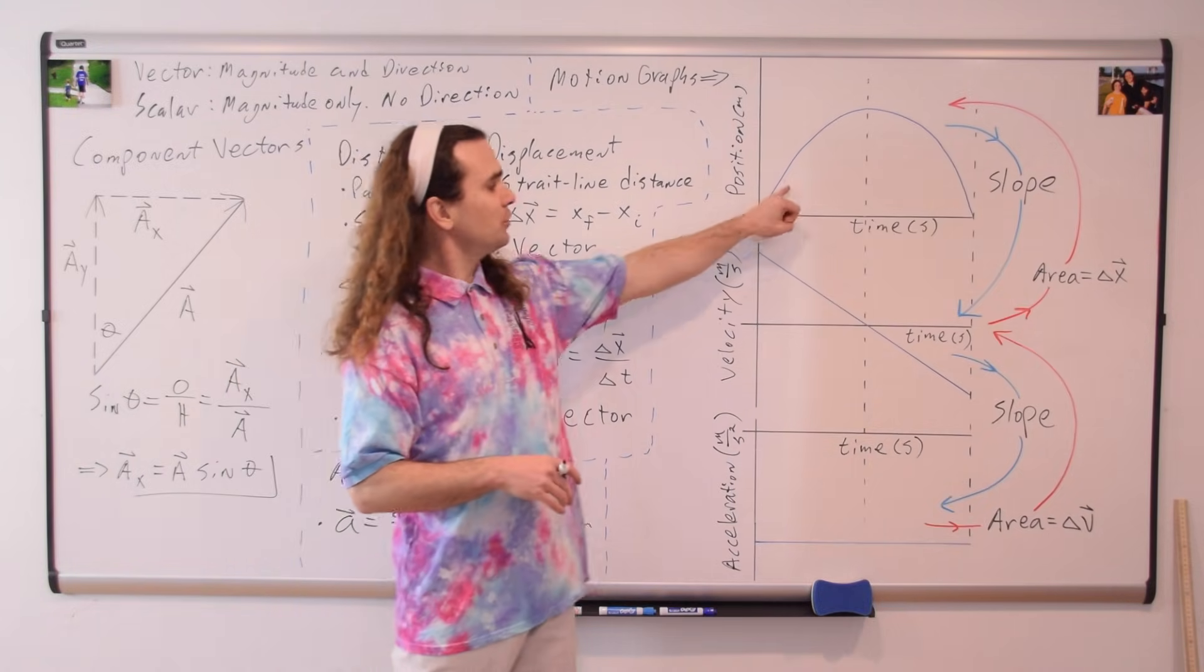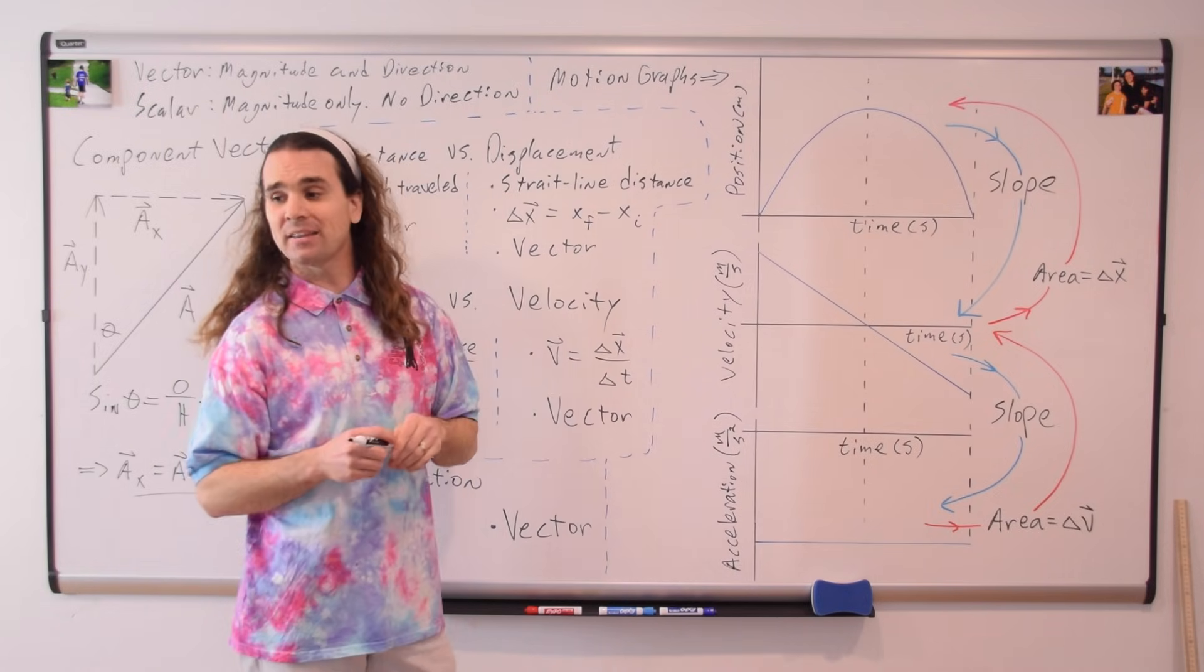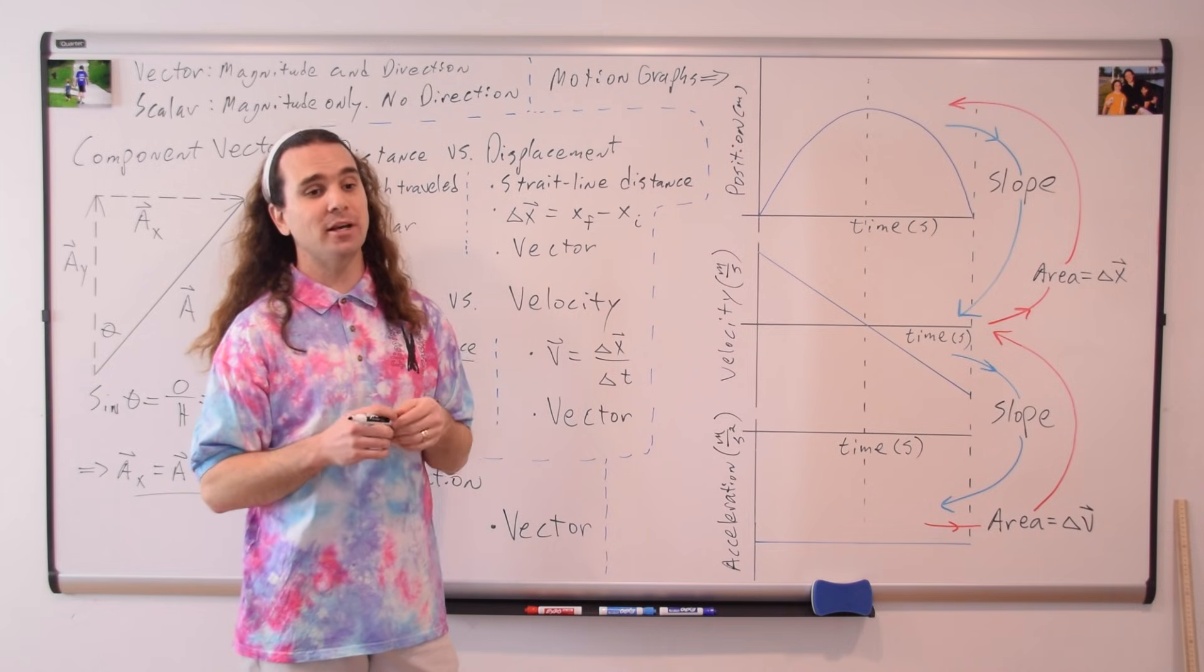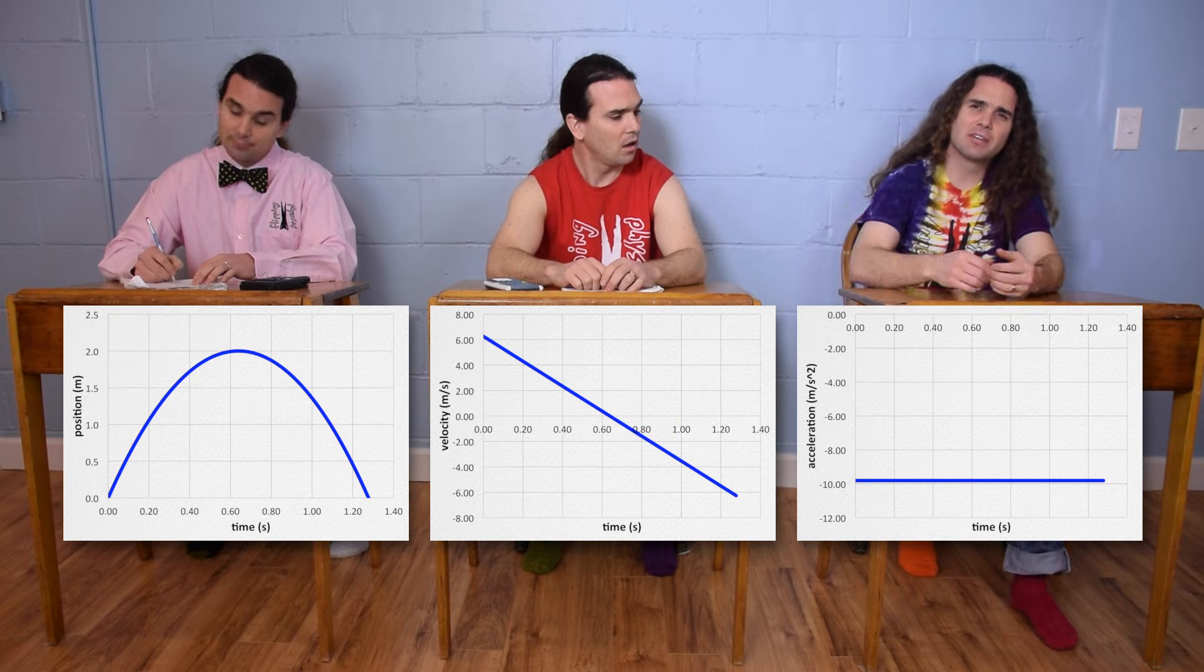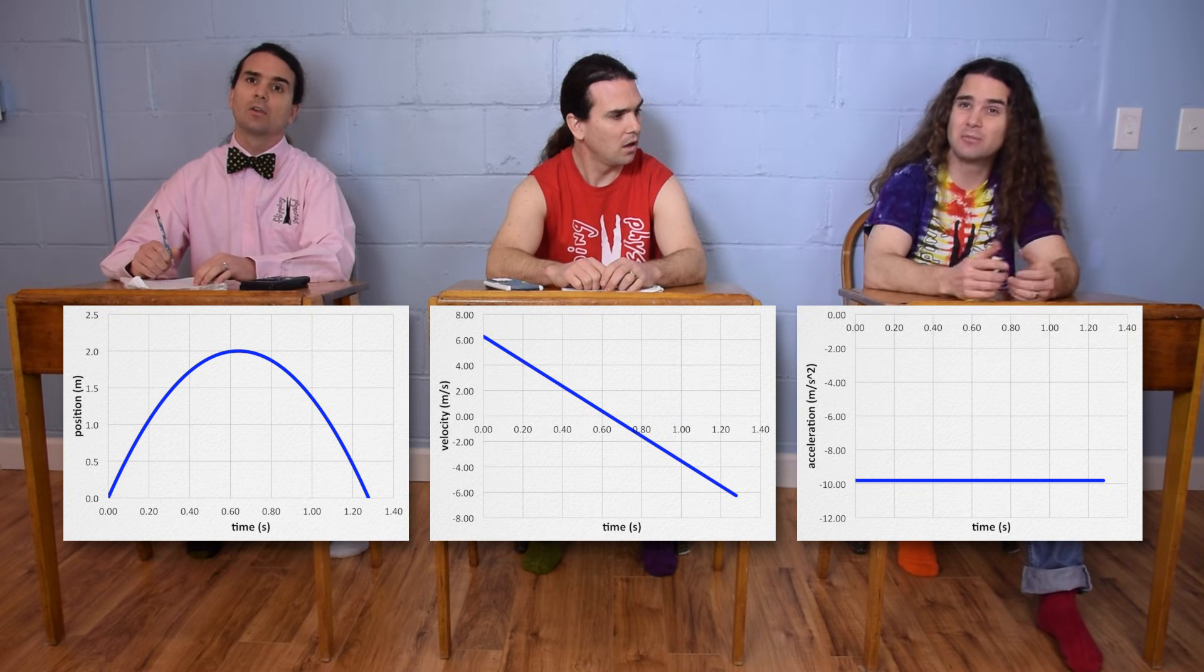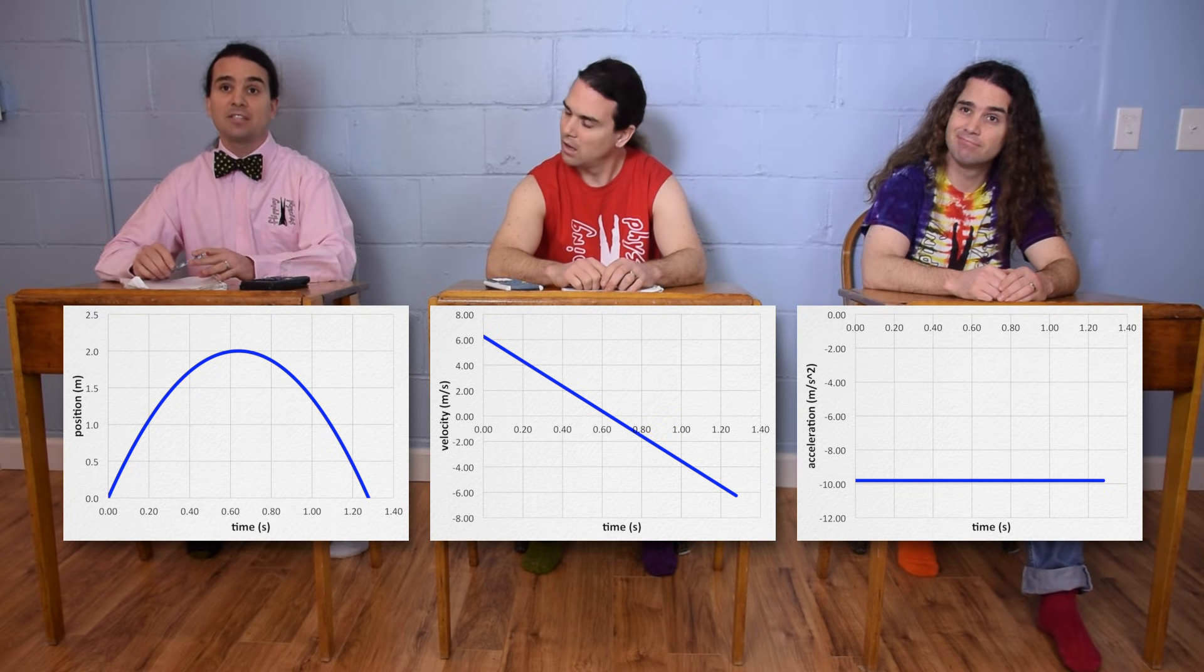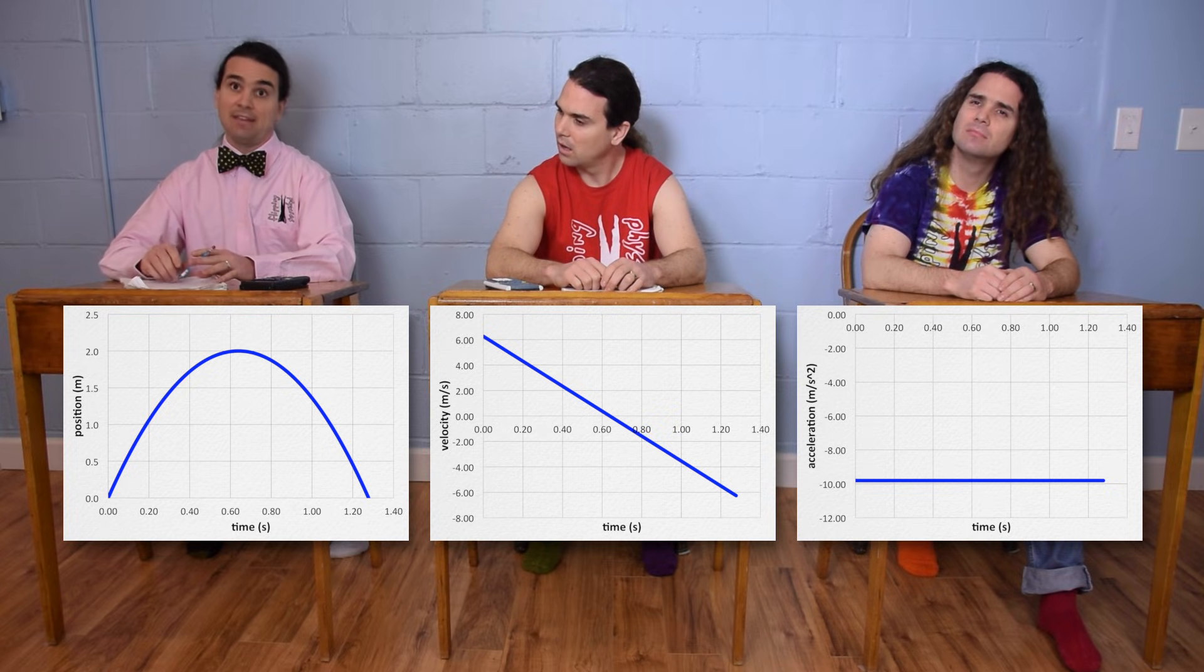I've now drawn the blue lines which describe the motion of this object. Looking at the graphs, class, what can you tell me about the motion of this object? Because the line on the acceleration versus time graph is horizontal, we know the acceleration of the object is constant. Because the velocity starts out positive and ends negative, you can see the object started moving upward and then fell downward.